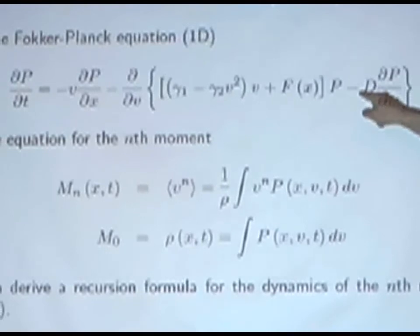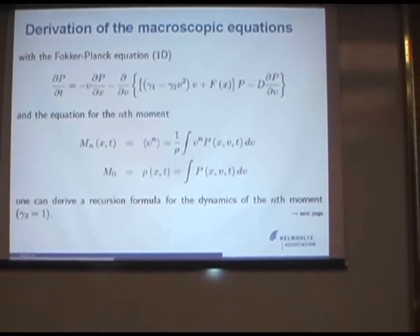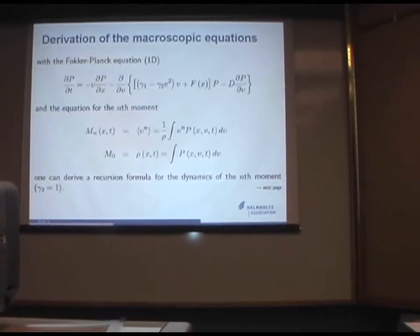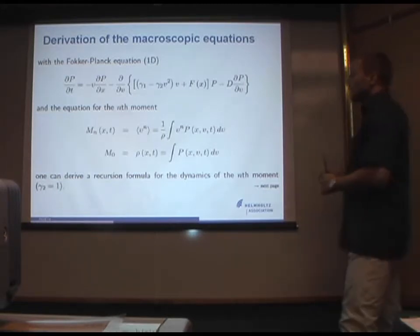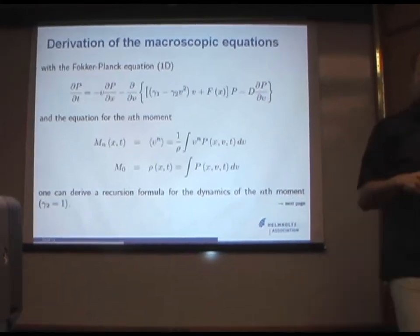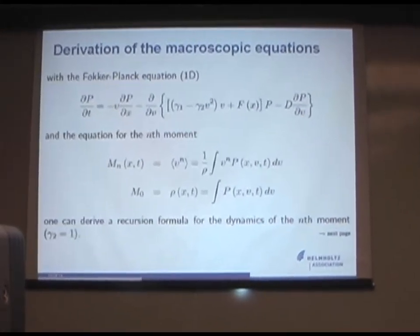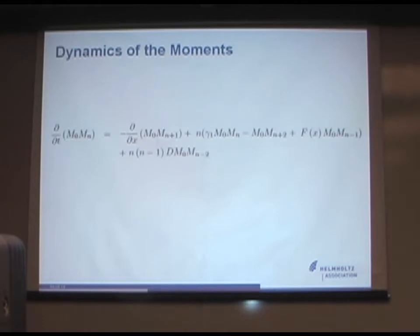If I apply this to this equation, then you can imagine that we have a whole series of partial differential equations for the time evolution of the moments. And this is what we actually want. Because what you cannot measure is this probability. So what we can measure are densities. This is a very common approach. Actually, it was used to derive the Navier-Stokes equation out of the Boltzmann equation. Now we do this with the Fokker-Planck equation.